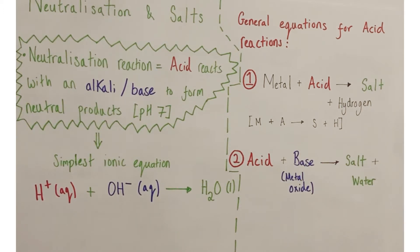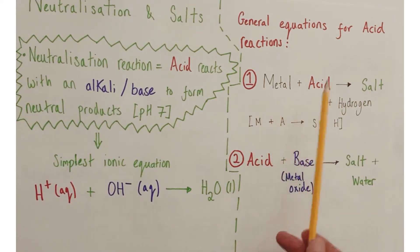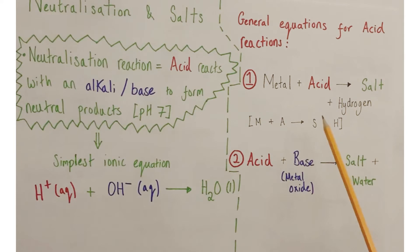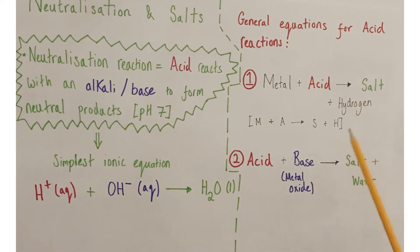There are four key general equations for reactions of acids. The first is sometimes called MASH: a metal reactive enough to react with dilute acid — something above copper in the reactivity series — reacts with acid to form a salt and hydrogen gas. All acids react with reactive enough metals to form salts and hydrogen gas, so you'll see fizzing and bubbling in those reactions.